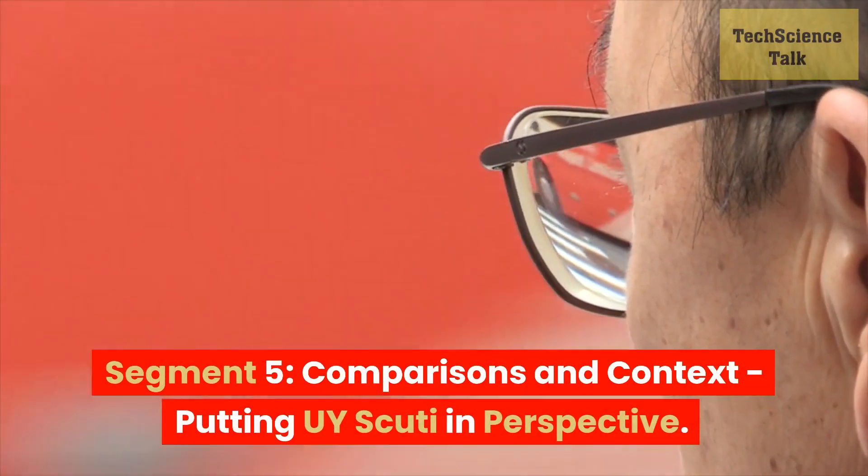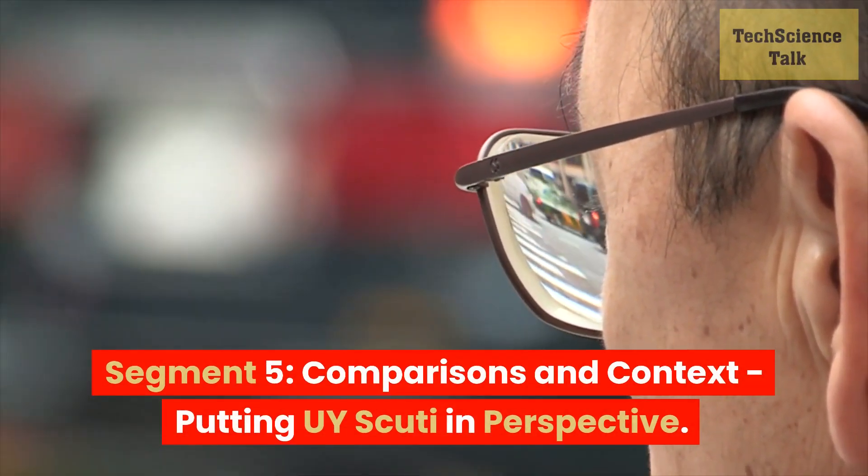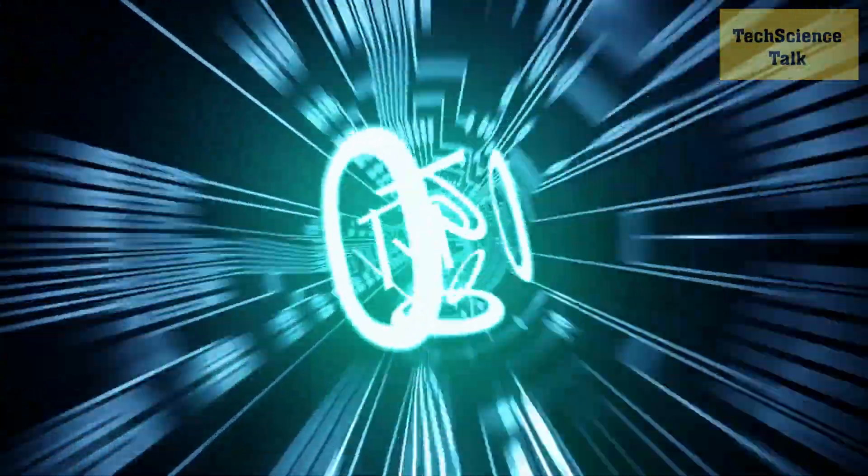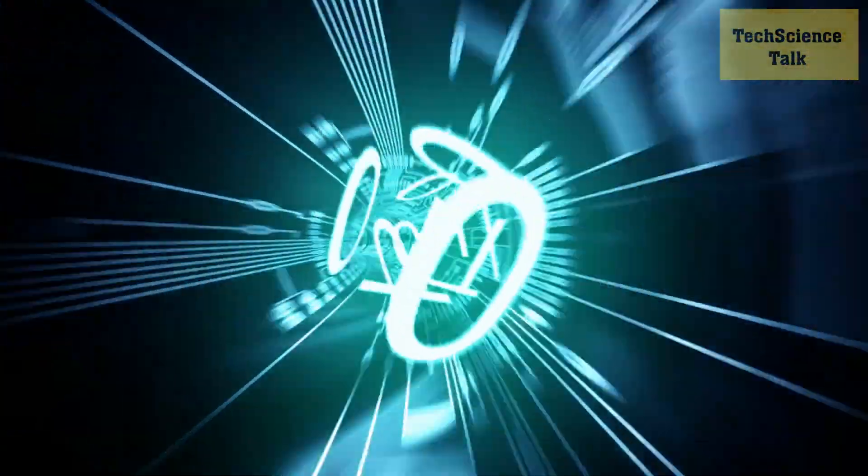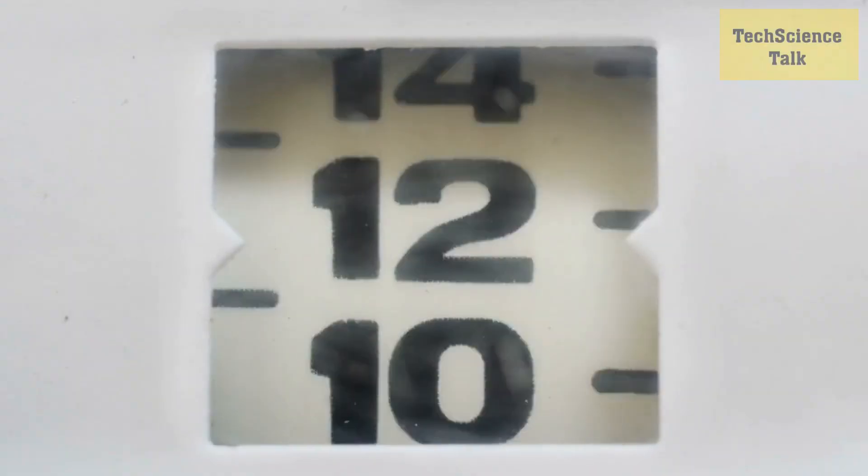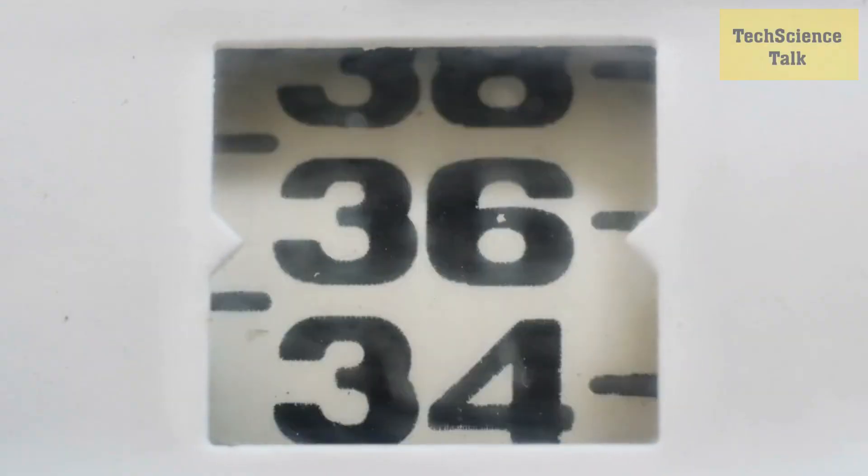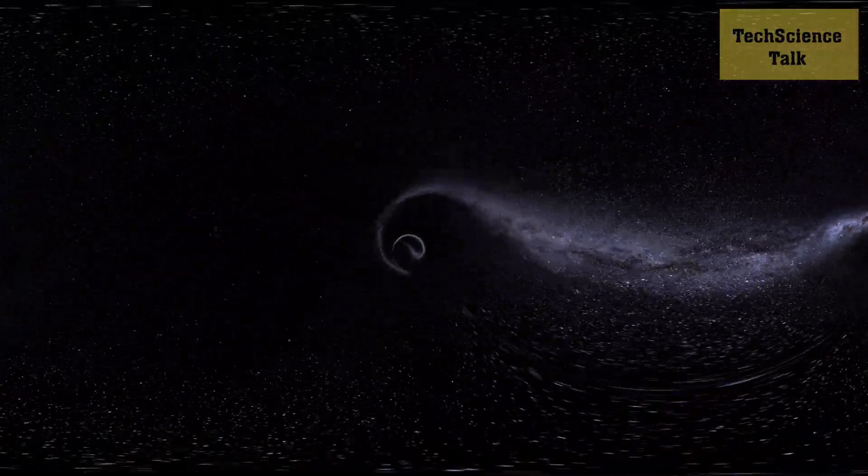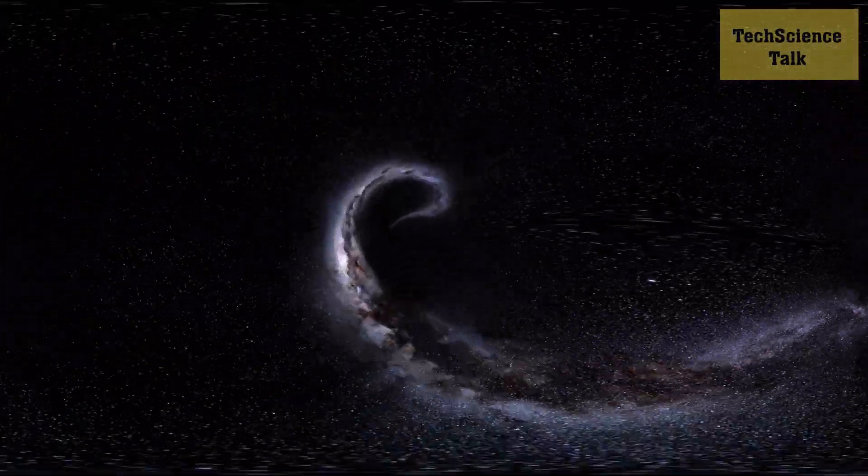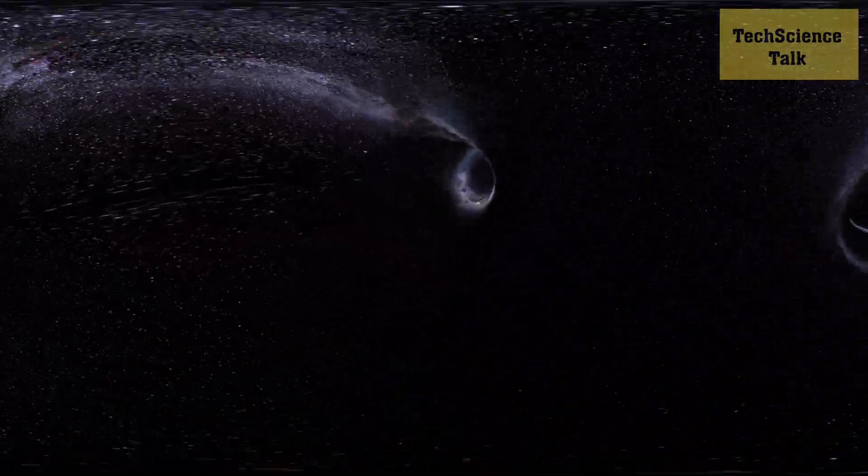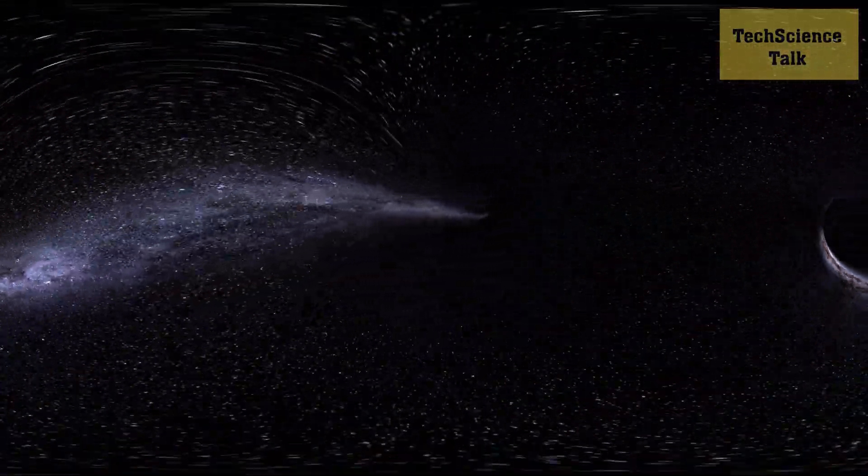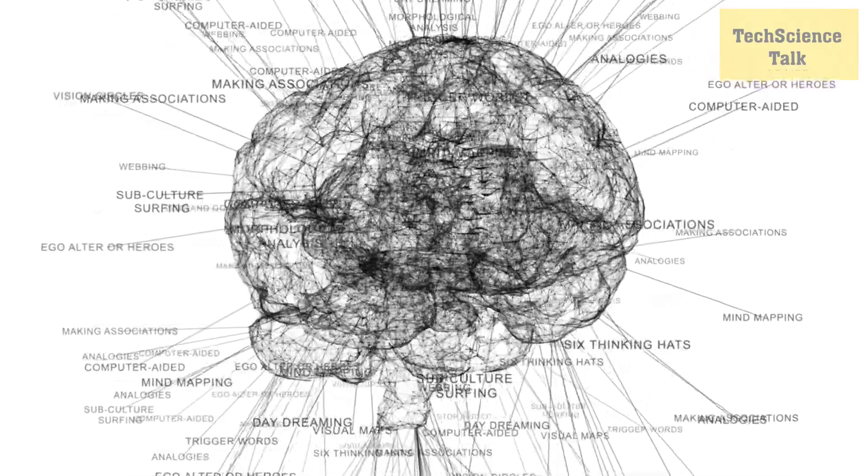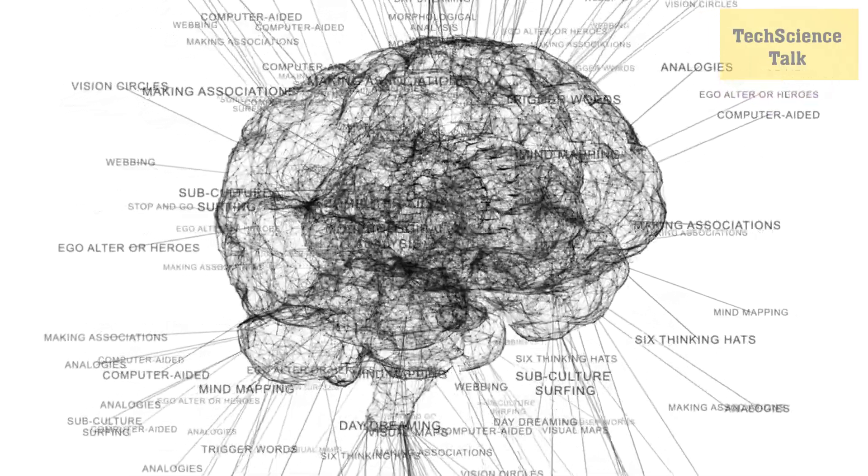Segment 5: Comparisons and Context - Putting UY Scuti in Perspective. To truly grasp the sheer size of UY Scuti, we need to compare it to other familiar objects. In this segment, we provide captivating comparisons that put the scale of this star into perspective. Picture UY Scuti's immense radius of over 1700 times that of our sun, which means you could fit millions of earths within its boundaries. Imagine standing at the center of UY Scuti and witnessing the mind-boggling expanse that stretches far beyond our imagination.